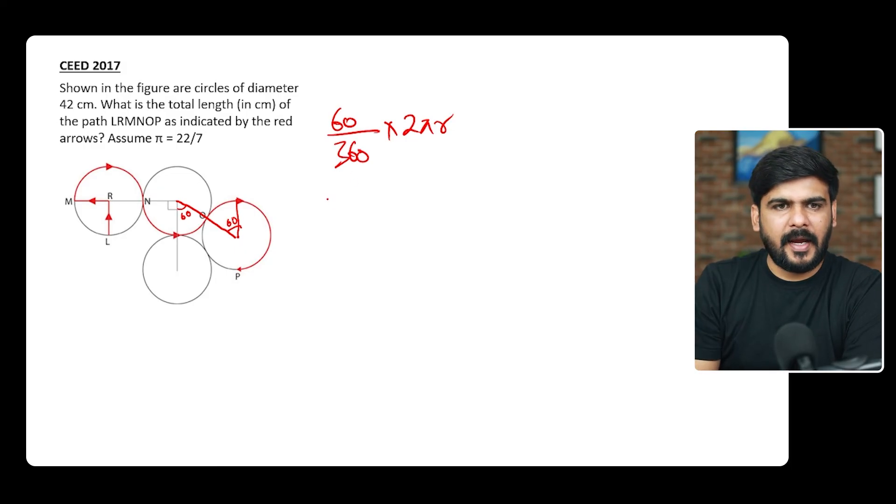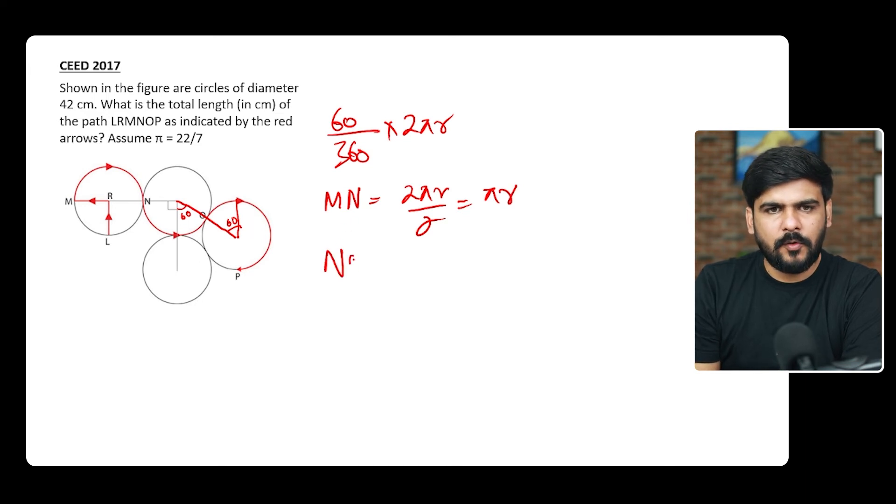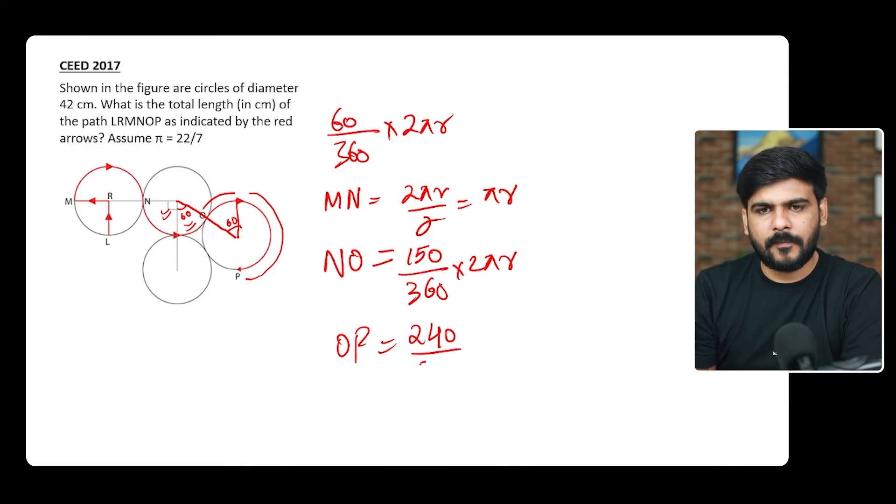So see, this question now is possible. We can calculate MN. It would be 2πr divided by 2, so that would be πr. Then we can find out NO. Now how much would be NO? 90 is this and 60 is this, so it would be 150/360 × 2πr. Then similarly we can find out OP. OP would be this much, that is 60 plus 180 complete, so it would be 240. So this is how we can find out, or what we can do: we can calculate all the angles in one time and do it.